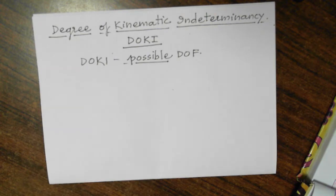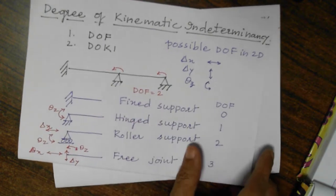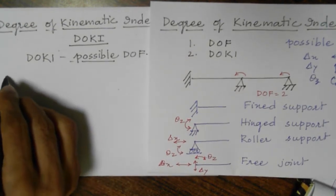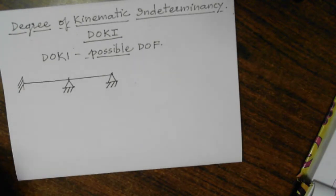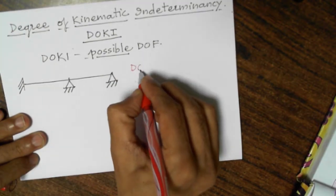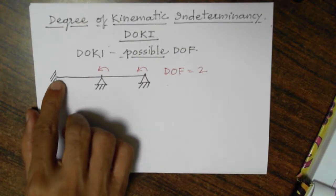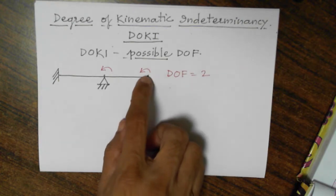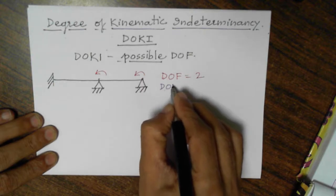Let us take the first example. We considered last time a continuous beam having degree of freedom equal to 2. This beam is hinged, fixed-hinged, and hinged. We saw the degree of freedom is equal to 2 — rotation at two supports is possible. Displacement and rotation at the fixed support is not possible. Displacement in x and y direction is not possible at the hinged supports; only rotation is possible. So degree of freedom is 3. Now what is degree of kinematic indeterminacy — that is, what is the possible degree of freedom?